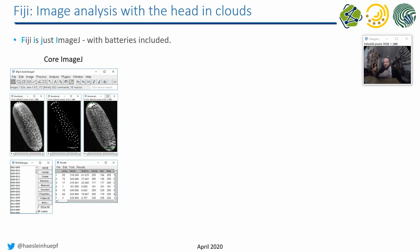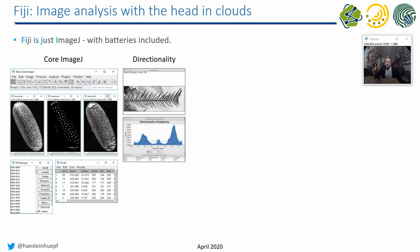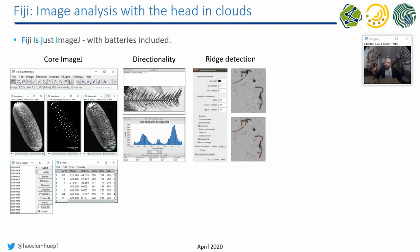This is Core ImageJ — this is the functionality ImageJ provides. And on top of this, there are hundreds of plugins for any kind of image analysis. For example, if you want to know in a particular image where there are lines in different directions, you can use the Directionality Plugin to measure the direction of objects in an image and draw a histogram of those directions.